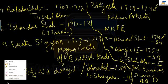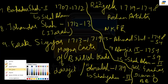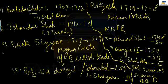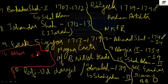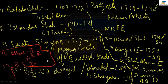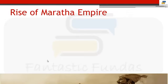Number 16 is Akbar II — the person who sent Raja Ram Mohan Roy to England to fight for his cause. The last king is Bahadur Shah Zafar. That was all about the Mughals, and now we will quickly move to the Marathas.